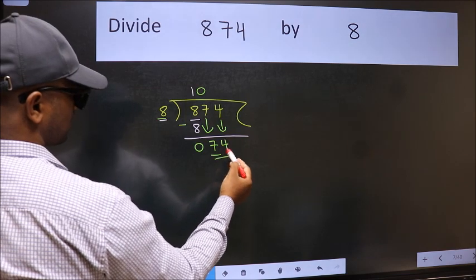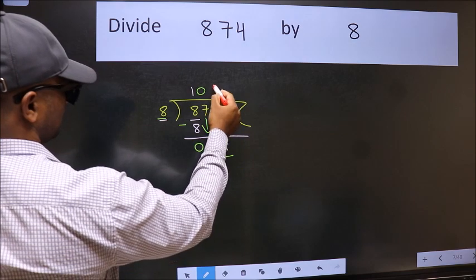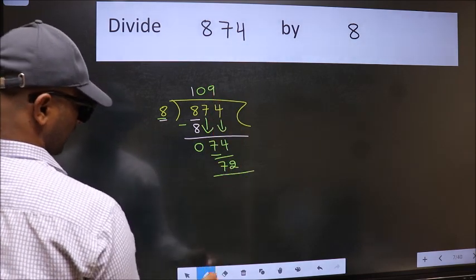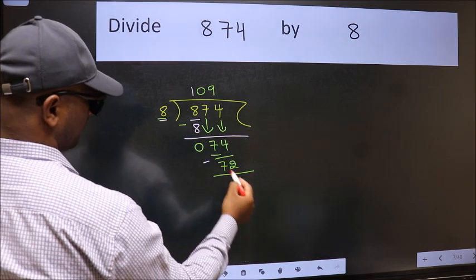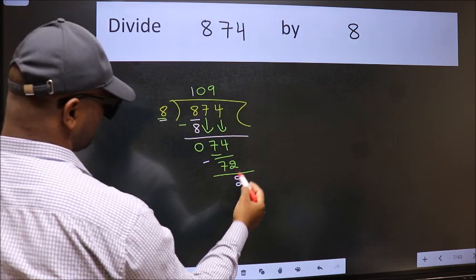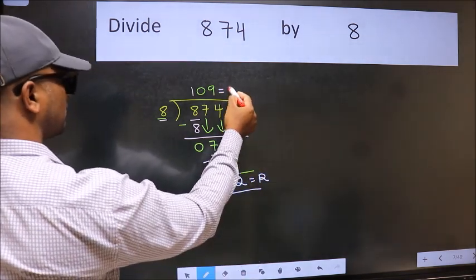Now 74. A number close to 74 in the 8 table is 8 nines 72. Now we should subtract. We get 2. No more numbers to bring down, so we stop here. This is our remainder and this is our quotient.